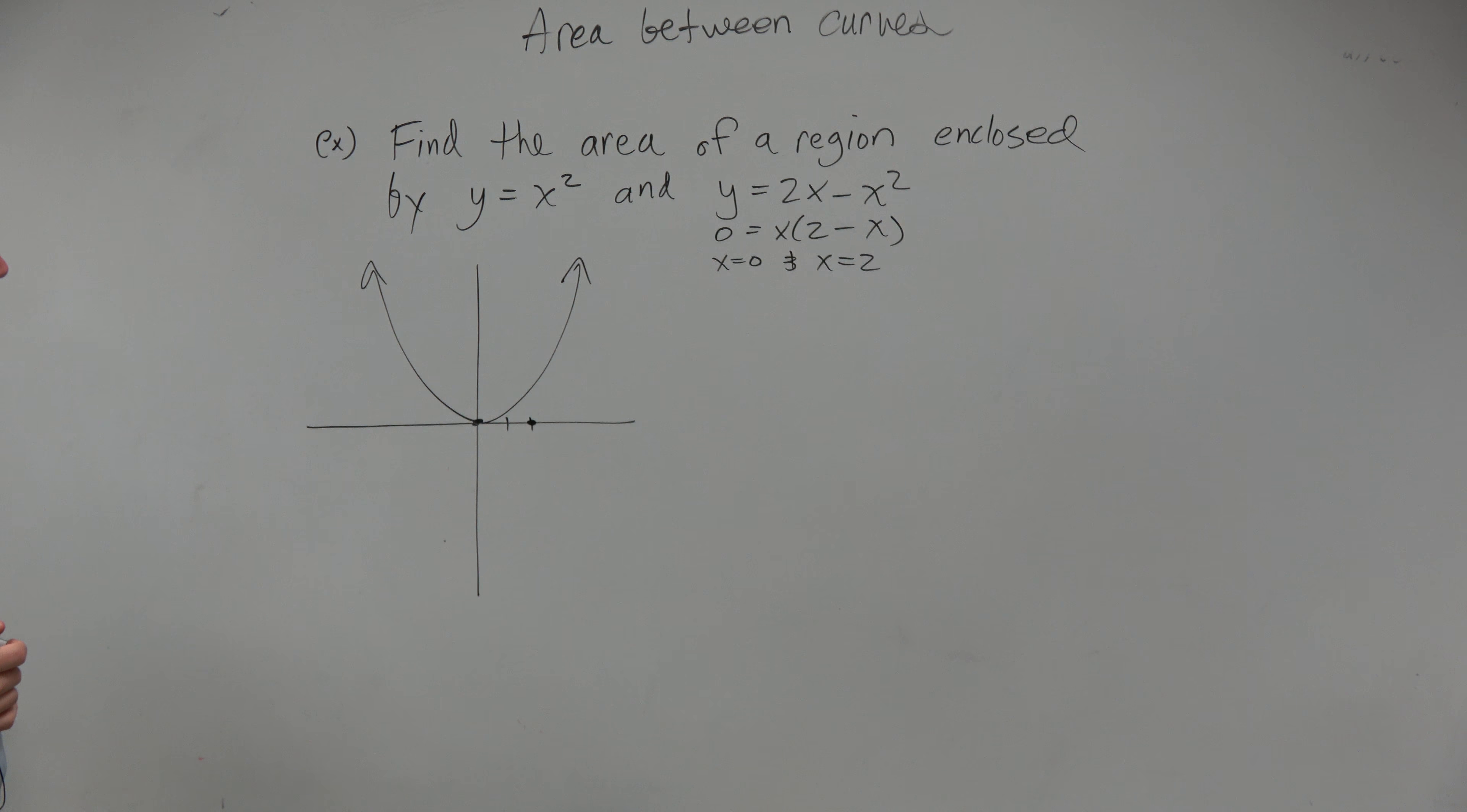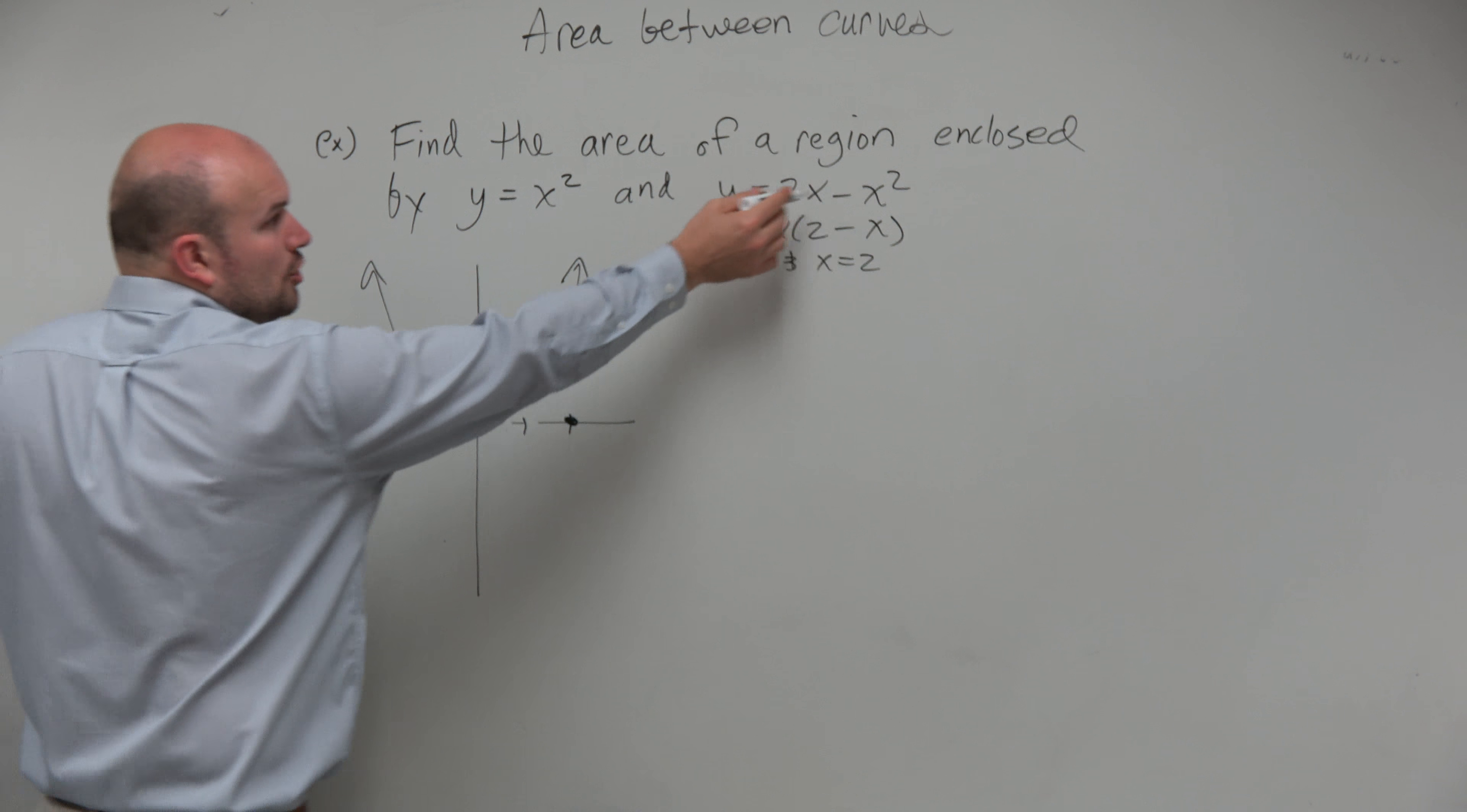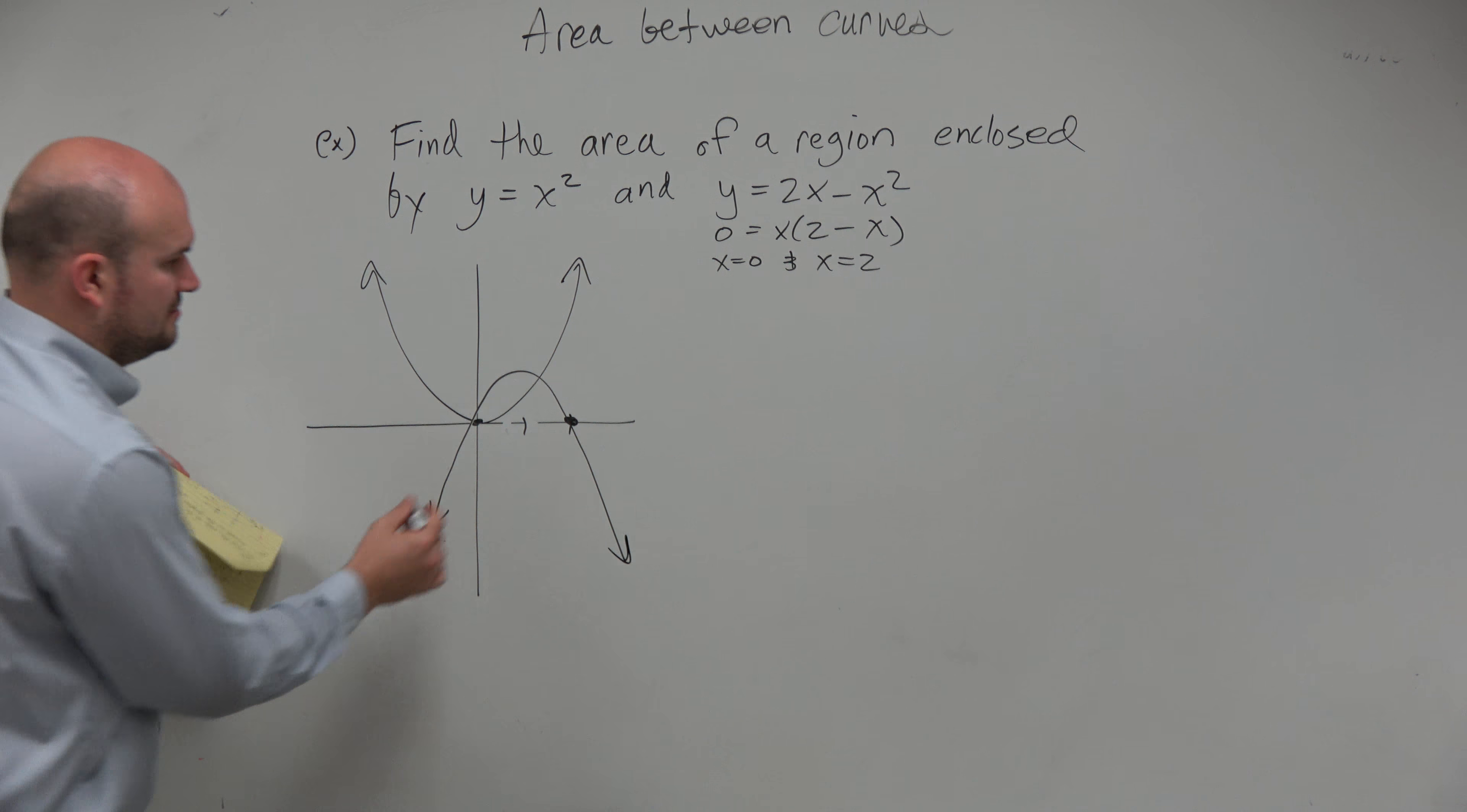Let's make this a little bit wider. So if we're looking at our graph, again, we know somebody said that it was opening down, right? Because that's a negative x squared. So just a kind of sketch, and that's all we're looking for, is that graph's going to look something like that, correct?